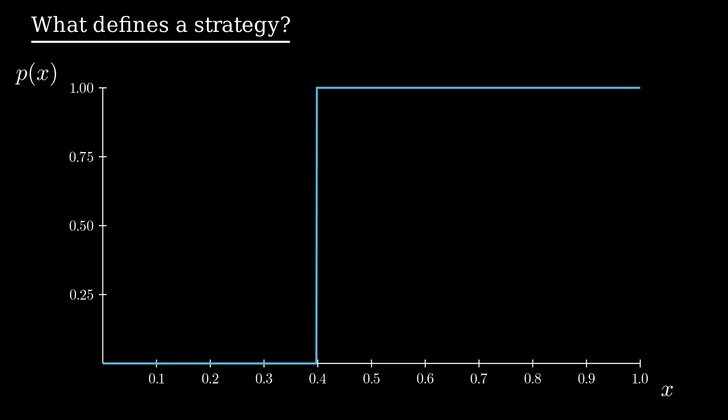In the end, we see that the optimal strategy boils down to a cutoff below which we continue to run, and above which we decide to jump.